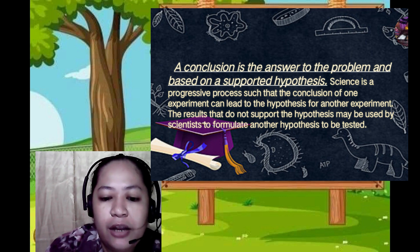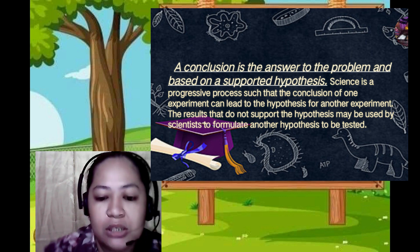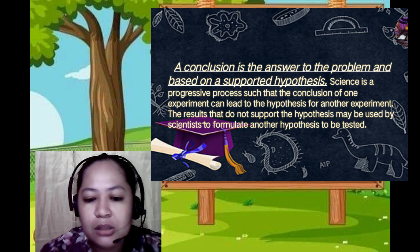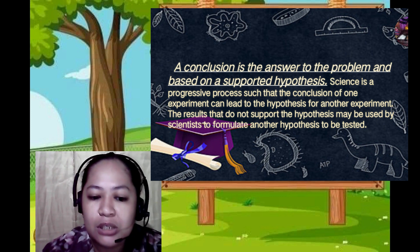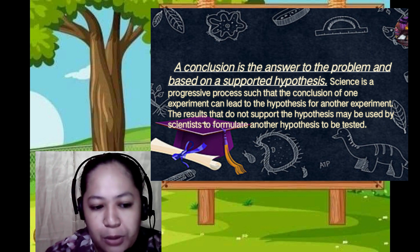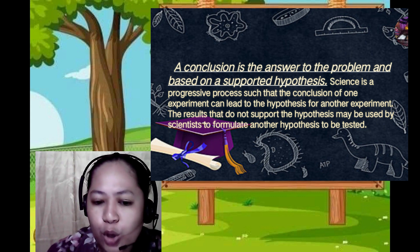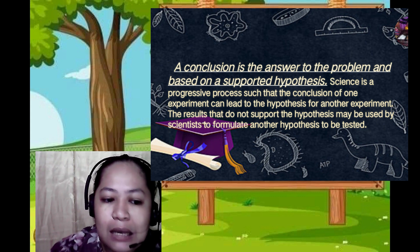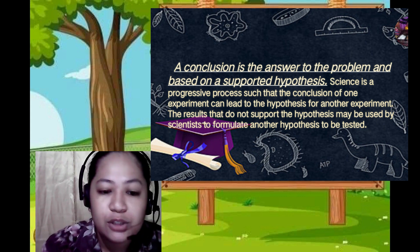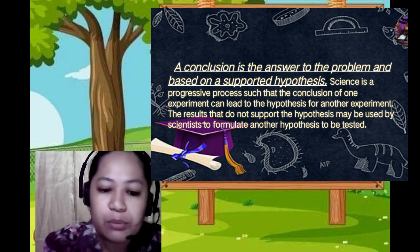The conclusion is the answer to the problem, based on a supported hypothesis. This is a progressive process, such that the conclusion of one experiment can lead to the hypothesis for another experiment. Doing research is not just for one answer — when we already have a conclusion, another study will actually come out of it from that new hypothesis.